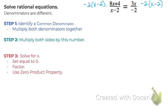So what happens when we do that? Notice that on the left we have an (x minus 2) up here in the numerator, and we have an (x minus 2) down in the denominator.